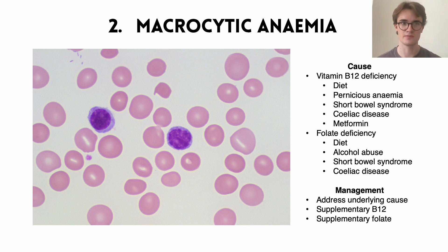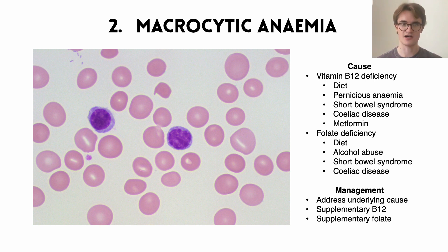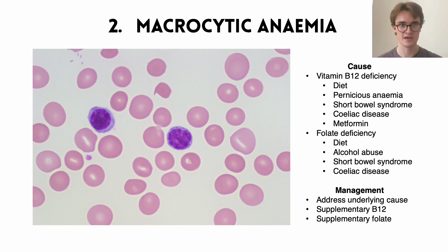The second essential blood smear to identify is macrocytic anemia. Unlike microcytic anemia, here the mean cell volume is larger than normal. Looking at this blood film, we can see that the red blood cells are the same size as or even slightly larger than the two big purple lymphocytes in the center — which is abnormal, as normally red blood cells are significantly smaller than lymphocytes. There are two main causes: vitamin B12 deficiency and folate deficiency.